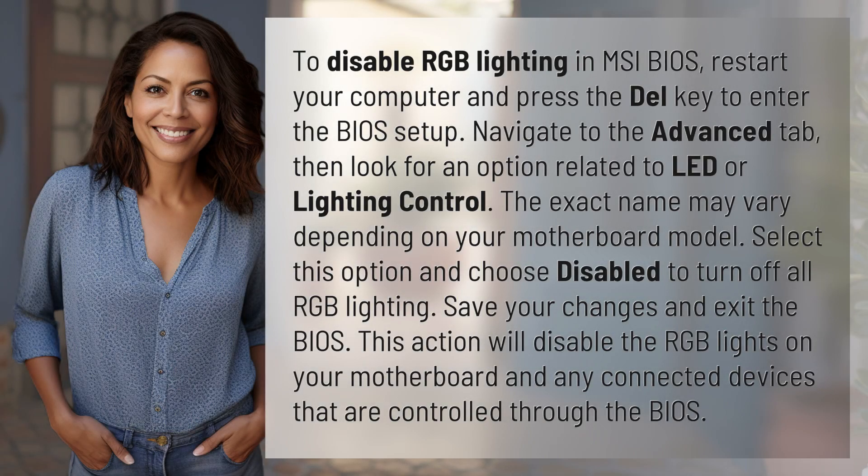To disable RGB lighting in MSI BIOS, restart your computer and press the Delete key to enter the BIOS setup. Navigate to the Advanced tab, then look for an option related to LED or lighting control.